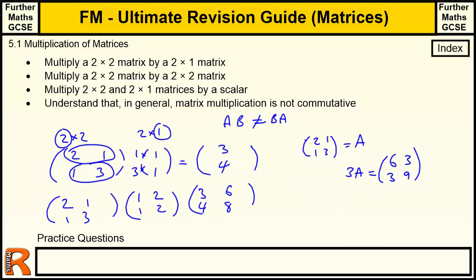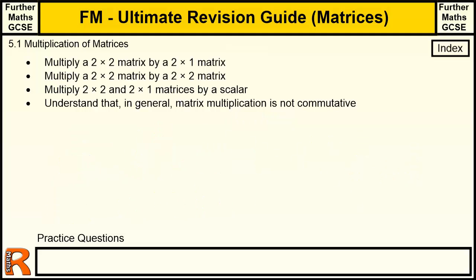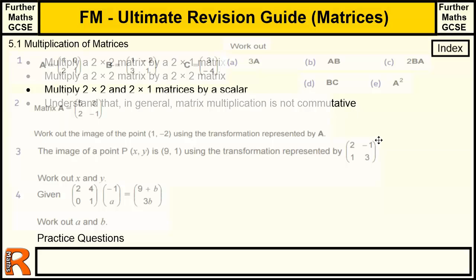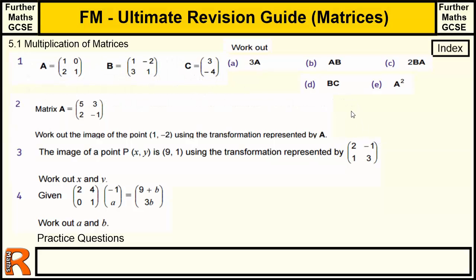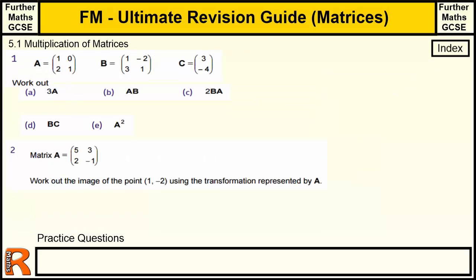Let's have a look at some questions. For the first question, 3 lots of A — that's multiplying matrix A by a scalar, which means just multiply each term by 3. So 3 lots of 1 is 3, 3 lots of 2 is 6, 3 zeros, and 3 ones. So that's fairly easy.